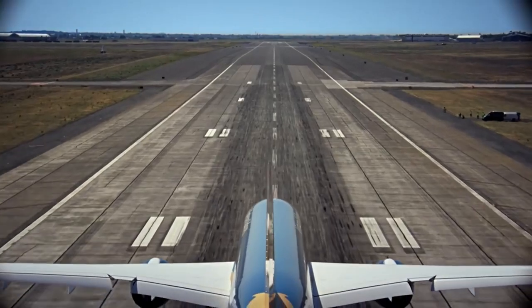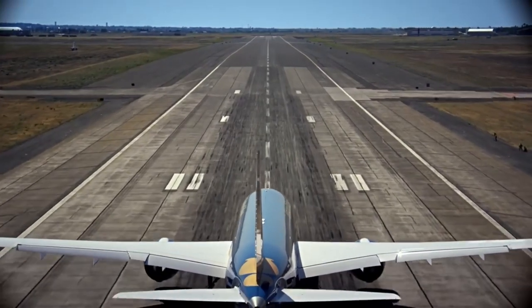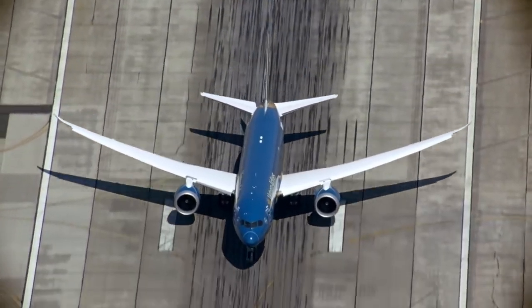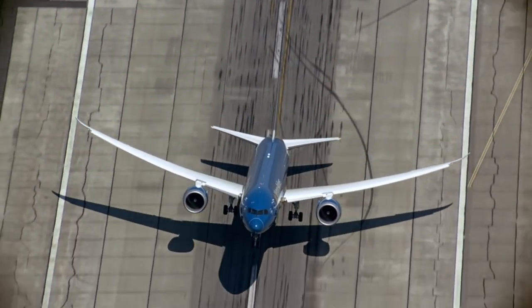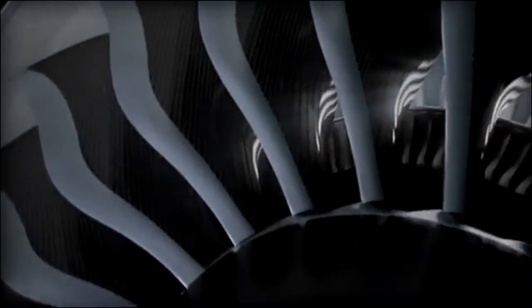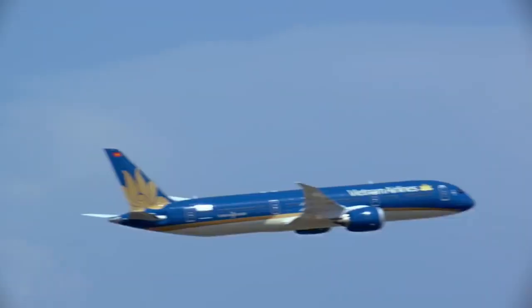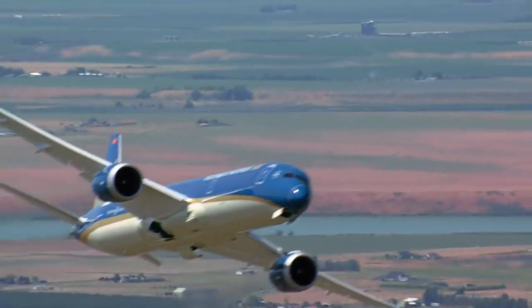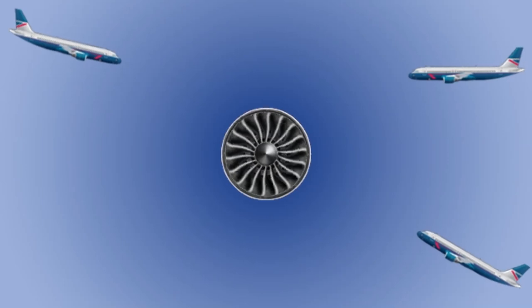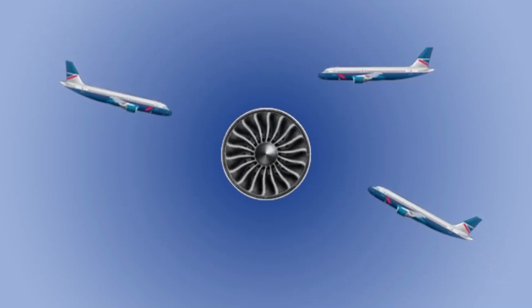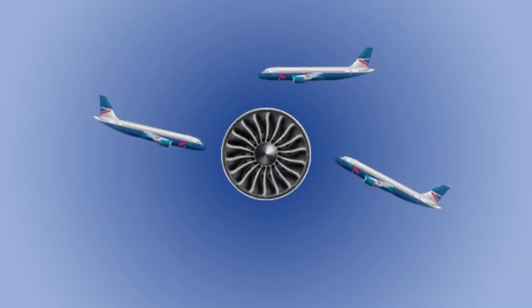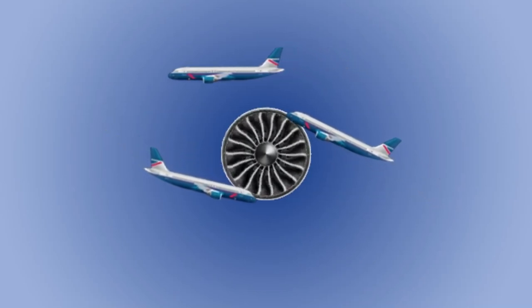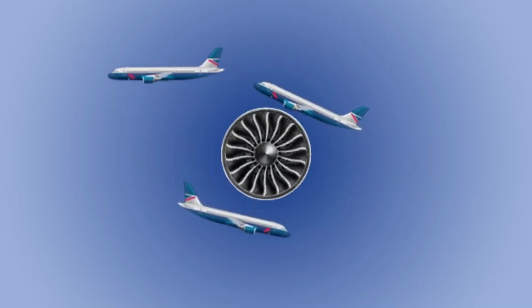Next up is variable fan geometry. This technology allows the fan blades to adjust their angle depending on the flight phase. During takeoff, the blades can increase their angle to provide more thrust. Conversely, during cruising, they adjust to a lower angle for optimal fuel efficiency. This adaptability enhances overall performance and contributes to significant fuel savings. Engines equipped with variable fan geometry can deliver excellent performance across different speeds and conditions. This flexibility is crucial for meeting the varied demands of modern aviation.